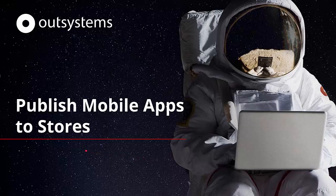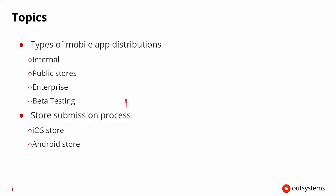Welcome to this session on how to publish mobile apps to the store. In this session, we'll look at the types of mobile app distributions that are possible, like internal distributions, public store distributions, enterprise or beta testing distributions. We'll also look at the store submission process for iOS and for Android. So let's go ahead and get started.